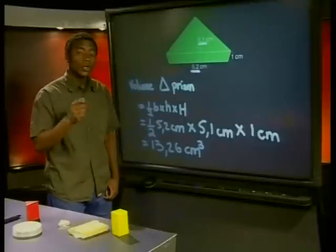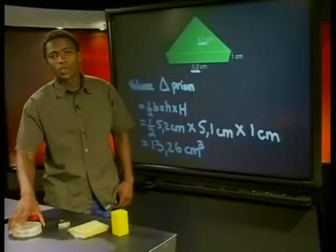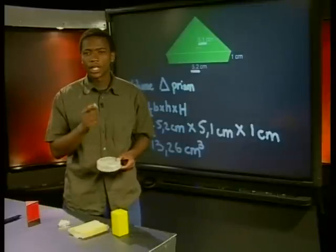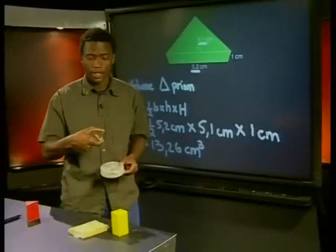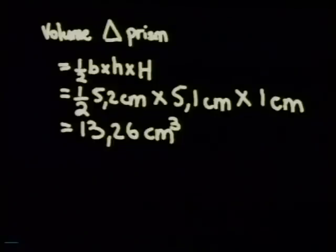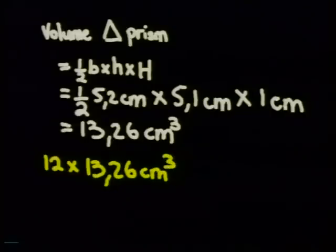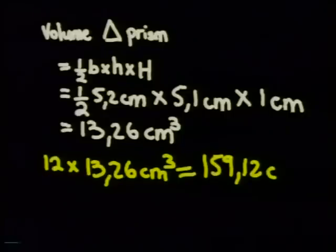How close was your estimate to this? Since the container holds 12 of these wedges, we can say that the container holds approximately 12 times the volume of this wedge. So 12 times 13.26 centimeters cubed is equal to 159.12 centimeters cubed.